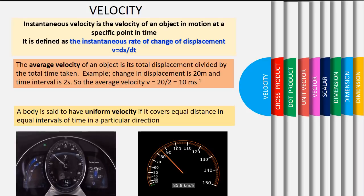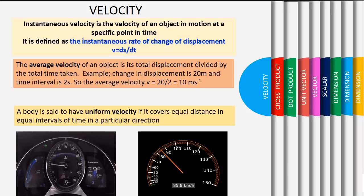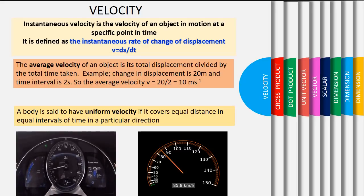A body is said to have uniform velocity if it covers equal distance in equal intervals of time in a particular direction. Refer to the meter on the right. The value is 85.8 km per hour.